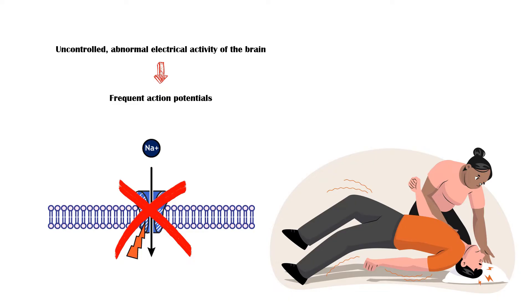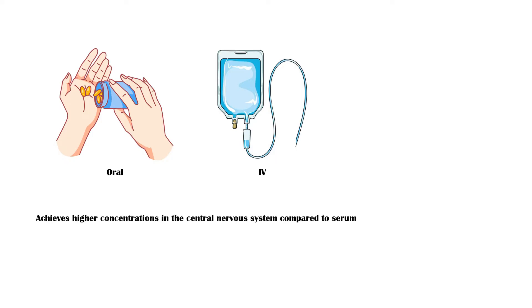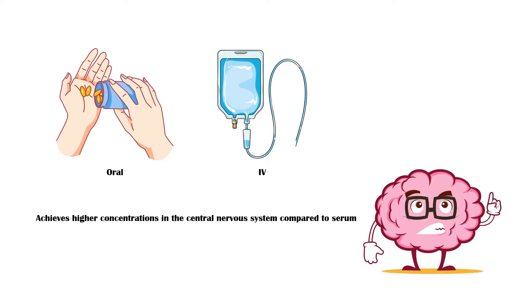Phenytoin can be administered orally and intravenously. Phenytoin achieves higher concentrations in the central nervous system compared to the serum. Therefore, it is ideal in the treatment of central nervous system disorders.